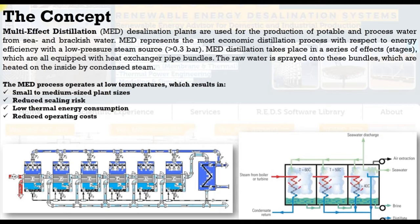MED distillation takes place in a series of effects or stages, which are all equipped with heat exchanger pipe bundles. The raw water is sprayed onto these bundles which are heated on the inside by condensed steam. MED process features include: relatively low operating temperatures, small to medium plant sizes, relatively low specific power consumption, low scaling risk, low thermal energy consumption, and reduced operating costs.